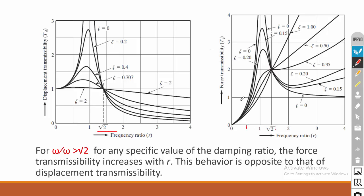For r less than about 0.4 or 0.5 the force transmissibility ratio is less than 1; for all remaining r values the transmissibility ratio will be high. You should not keep r greater than 2 in the case of base motion. That is why base vibration is considered a typical situation.